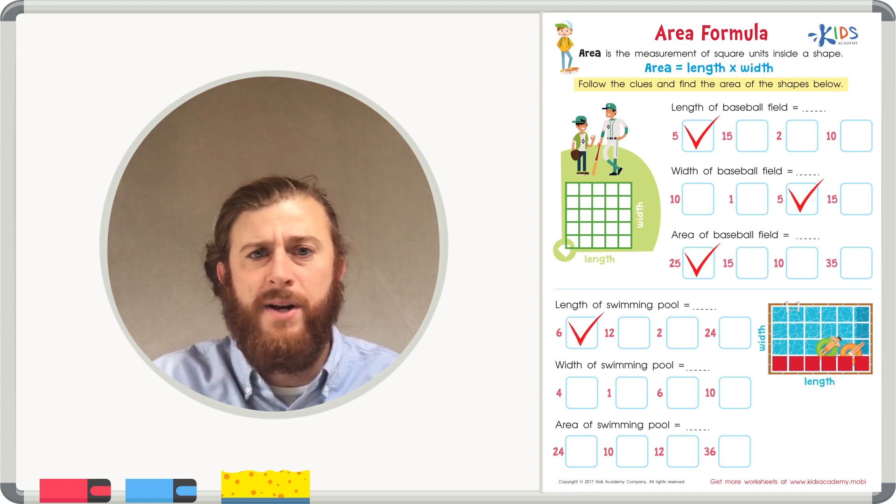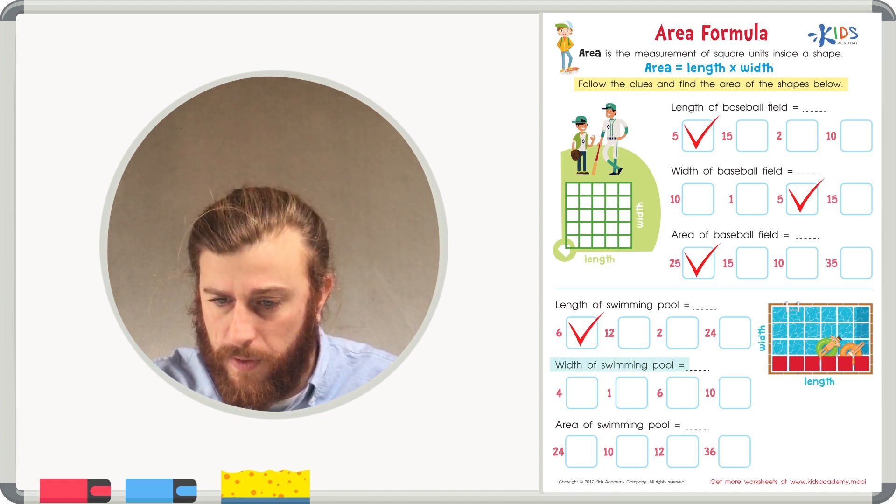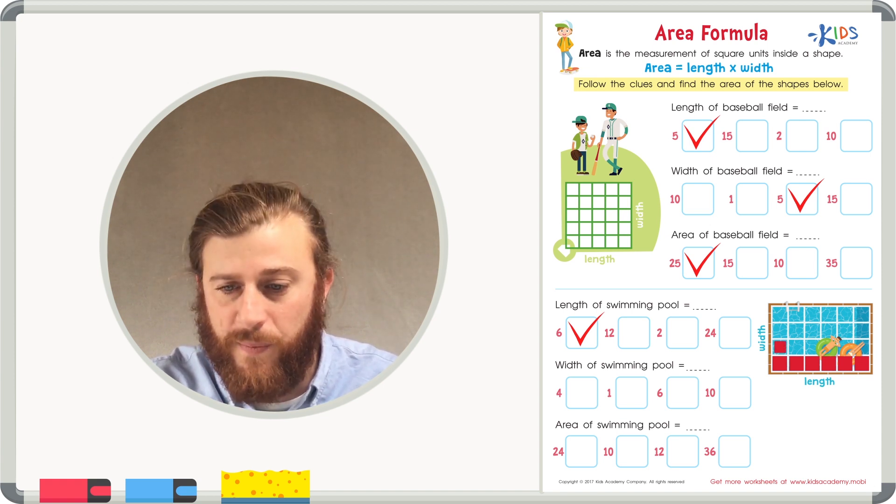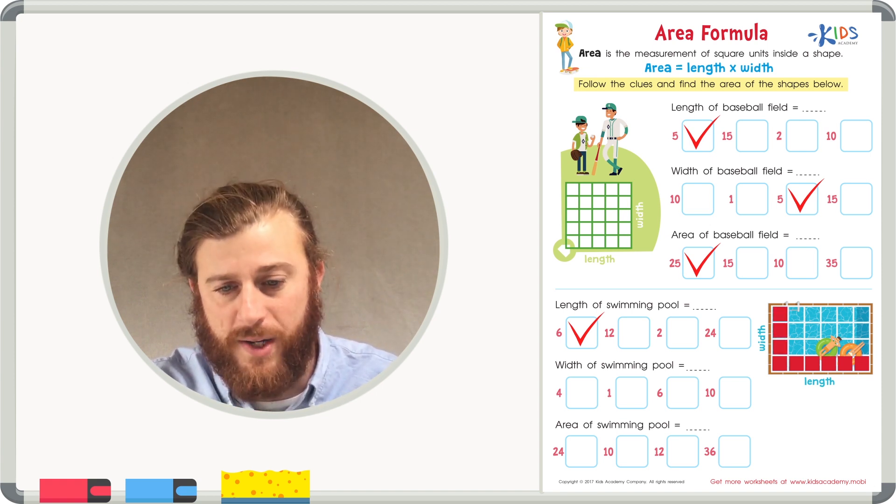Let's count the boxes up and down to see the width of the swimming pool. The width of the swimming pool is one, two, three, four squares wide.